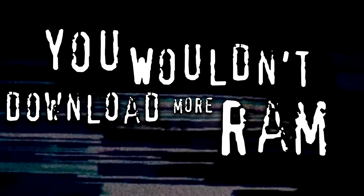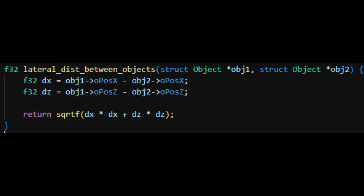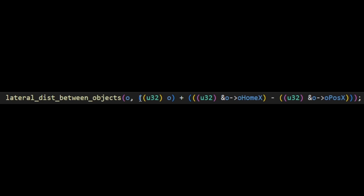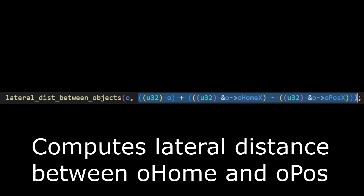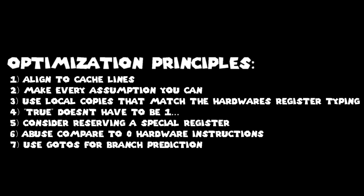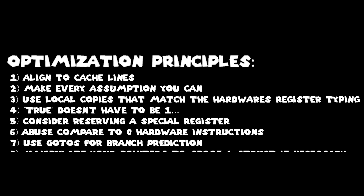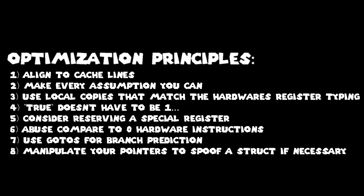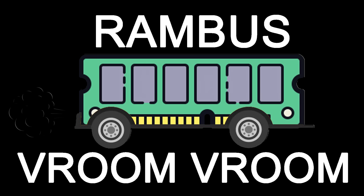Another memory optimization is to repurpose functions in ways that are absolutely not intended. Take a look at lateral_dist_between_objects — this function uses the Pythagorean theorem to get the distance between two actors. We can use this for any vector we'd like. By passing a pointer to any vector and shifting its offset by the same amount that the position vector is offset from an actor's memory location, the code will still correctly compute the lateral distance. This might get you fired from your job, but it will save you caching another function on the CPU.